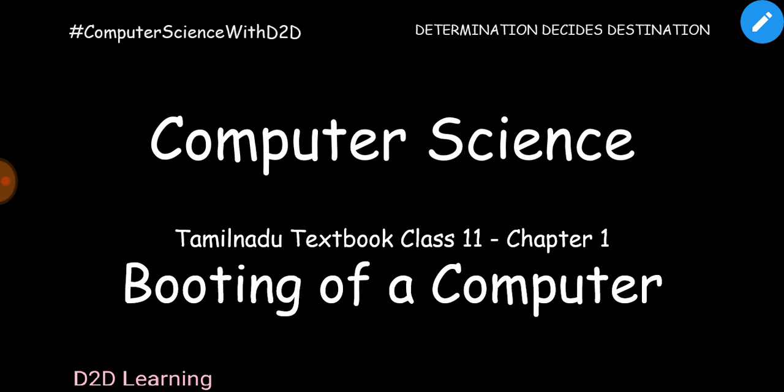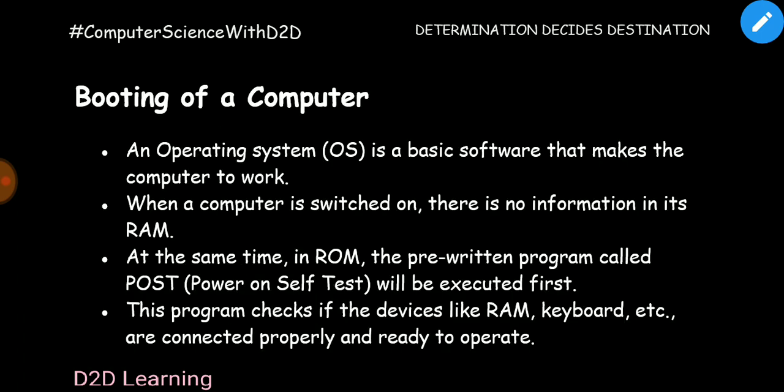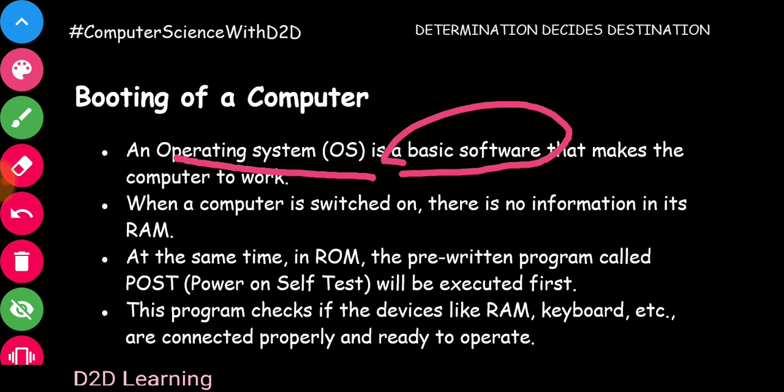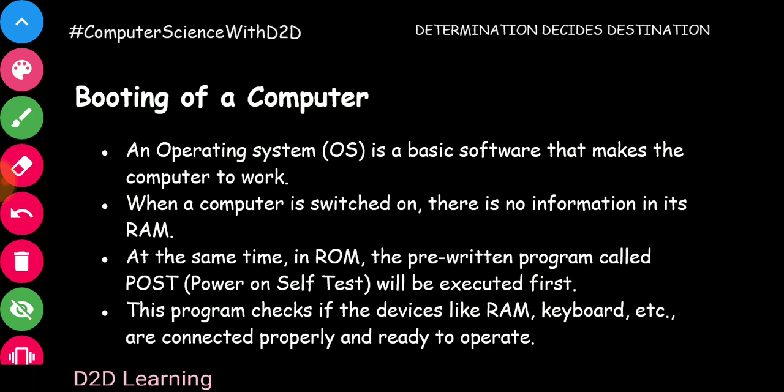In this particular video we will talk about booting. So first, booting is what we need to do — OS is what we need. OS is the operating system. OS is our computer's basic software. We also have RAM — random access memory — and ROM — read only memory.